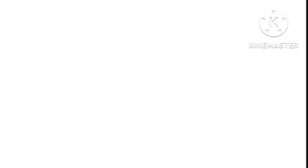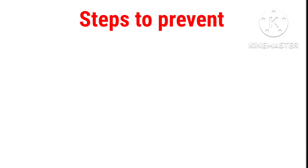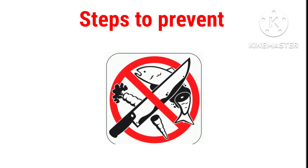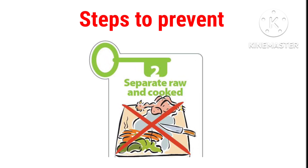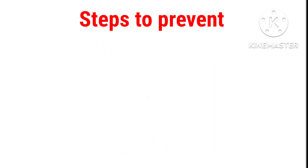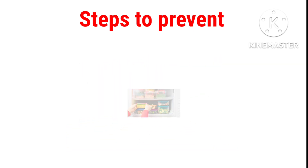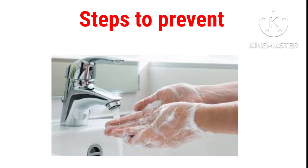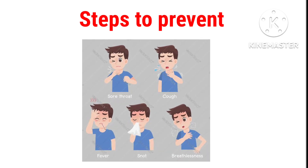Steps must therefore be taken to prevent pathogenic bacteria getting into food: first, prevent cross-contamination of food; second, separate raw and cooked food; third, keep stored food covered; fourth, wash hands frequently; fifth, do not handle food if suffering from symptoms of diarrhea or vomiting.